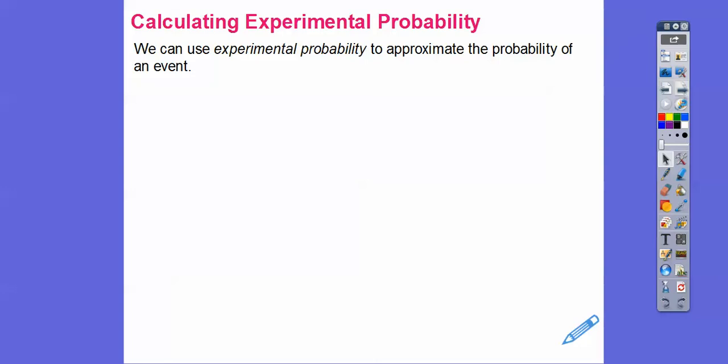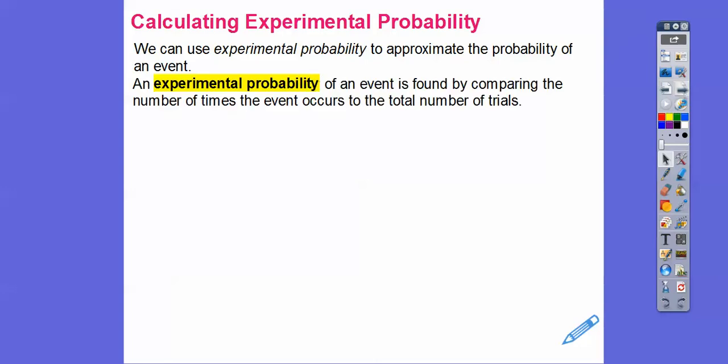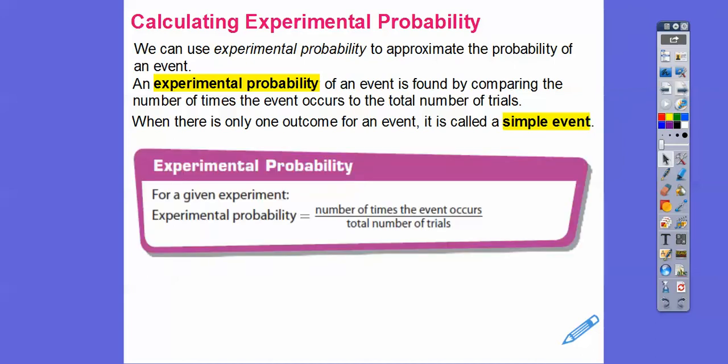We can use experimental probability to approximate the probability of an event. The experimental probability of an event is found by comparing the number of times the event occurs to the total number of trials. When there's only one outcome for the event - in the next lesson we're going to do two events together, tossing a coin and spinning a spinner, or a coin and rolling a cube, or tossing a cup and rolling a cube. But this one, we're just doing one of them - either tossing a coin or tossing a cup or rolling a cube. These are all called simple events. If they are simple events, then the experimental probability is the top number is the number of times that event occurred, the favorable outcomes. The bottom number is your total outcomes, your total number of trials.